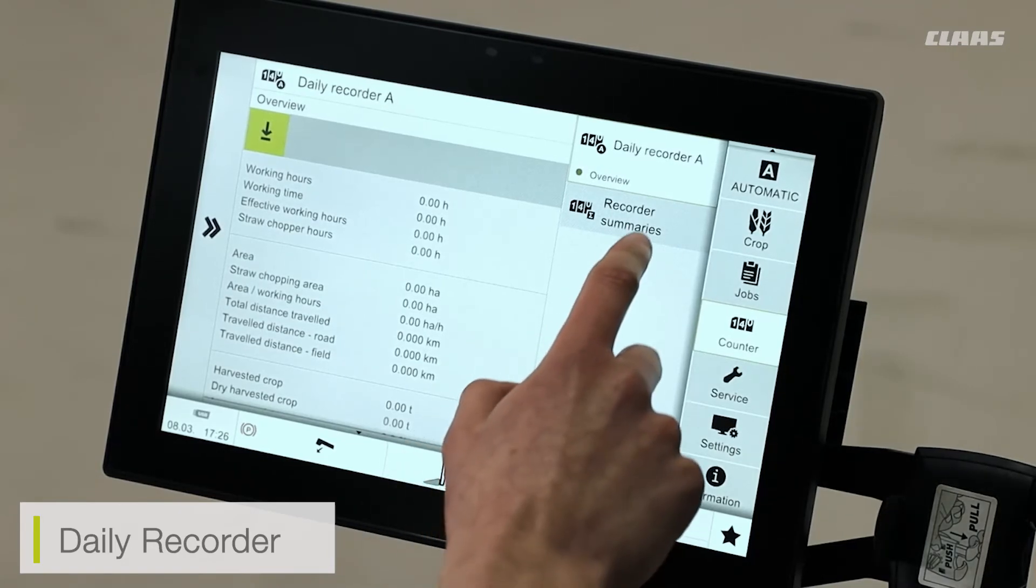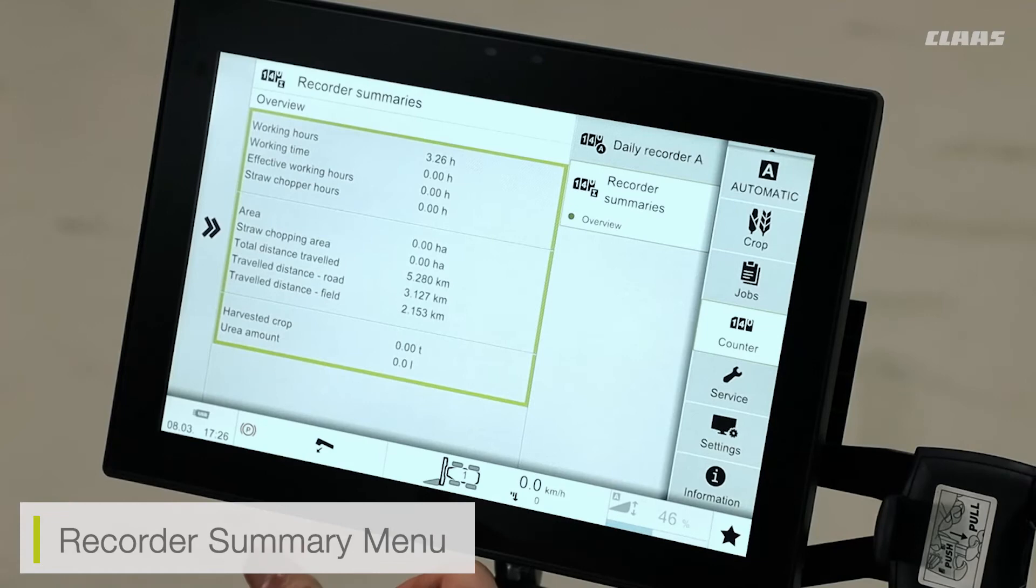I also have a recorder summary menu. This is not resettable, and provides a complete overview of the entirety of the machine's history, the working hours, and the area it has cut.